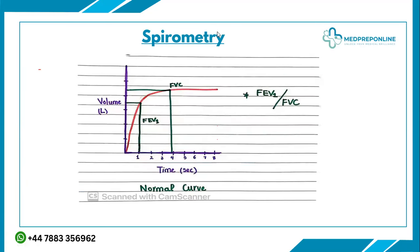FEV1 and FVC are things we talk about a lot but sometimes don't fully understand. Looking at this graph, the x-axis shows time in seconds and the y-axis shows lung volume in liters. FEV1 is the forced expiratory volume in one second — the amount of air a person can force out of their lungs in one second. FVC is the total volume of air that can be exhaled during a maximal forced expiration.